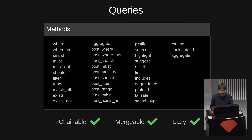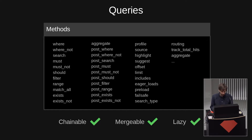The Elasticsearch queries are chainable, but essentially they are also mergeable and lazily evaluated. This means, like you do with ActiveRecord, the query only gets really evaluated when you call, for example, total_count on it, or ask for the records — dot records or dot results. Then the query is sent to Elasticsearch and you get the results back, just like you would imagine when using ActiveRecord.